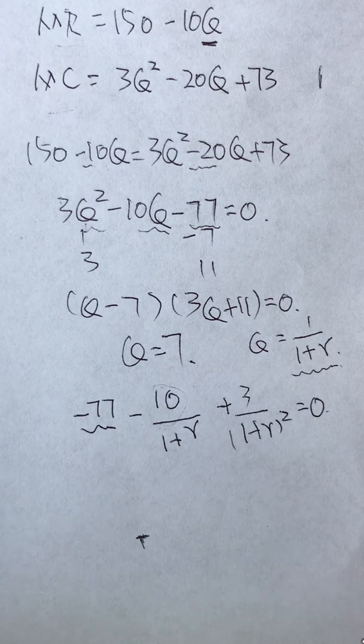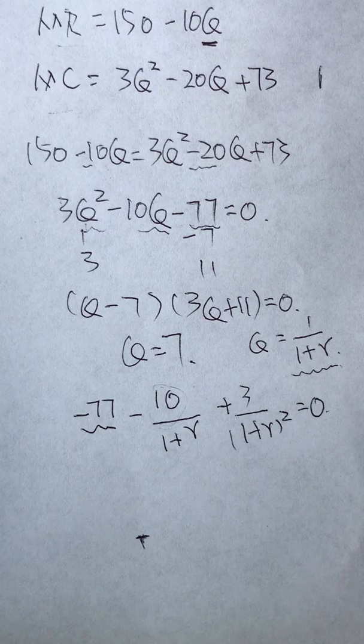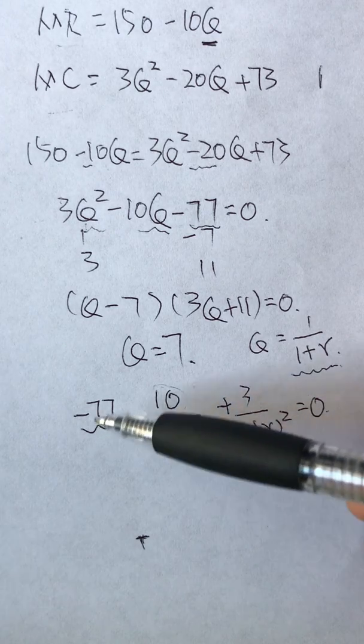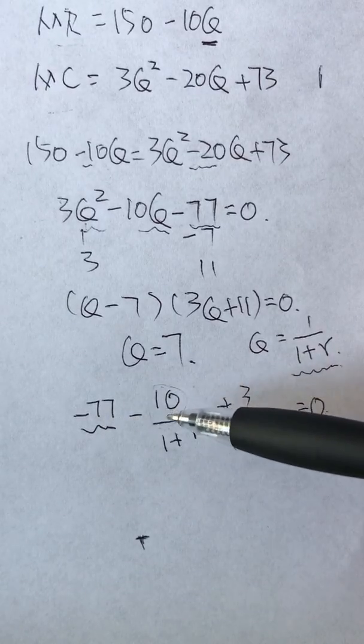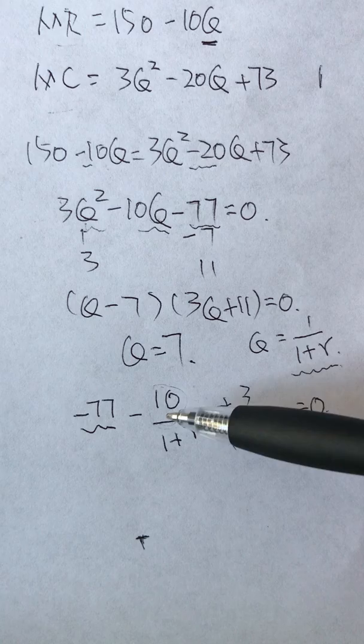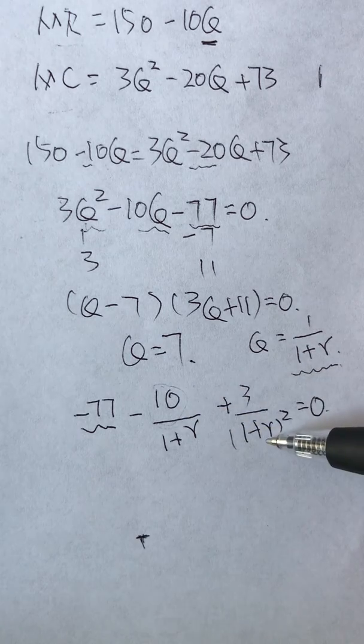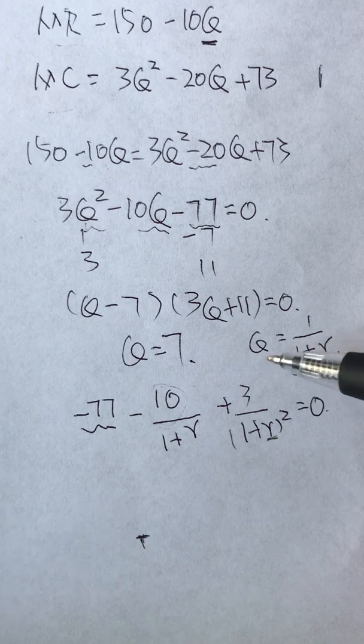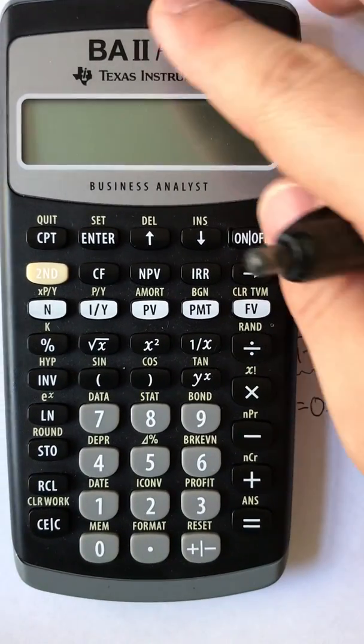I'm going to show you how we can solve this using the calculator. If you push the buttons faster than you're writing, you can probably solve this in a much more reliable way. The first number we're going to enter is negative 77, the second is negative 10, and the third is 3.